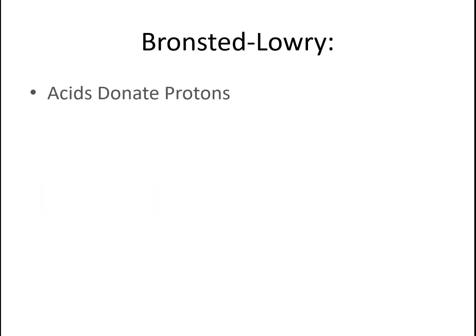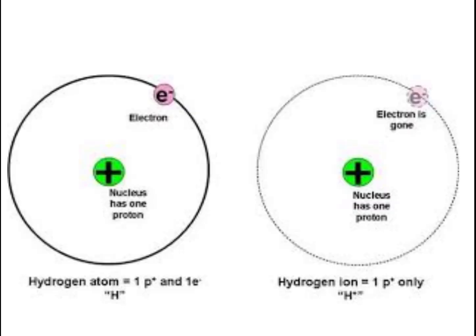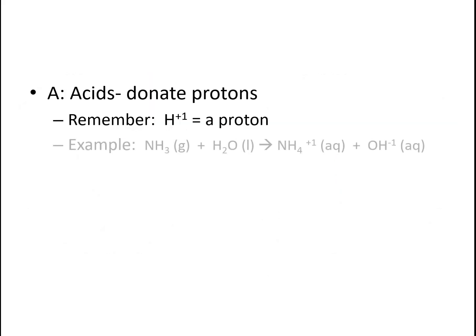In our Bronsted-Lowry theory, acids donate protons and bases accept protons. Our acids are donating protons, or in this case donating hydrogen ions — same thing. Your hydrogen plus-one ion is a proton because it gave away an electron. Here's an example equation: if we have ammonia and water, they will form ammonium and a hydroxide ion.